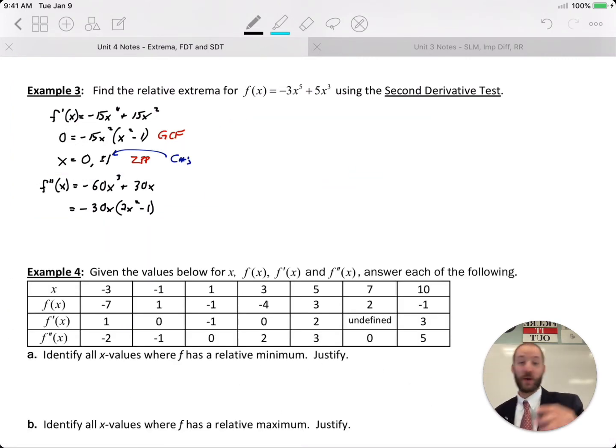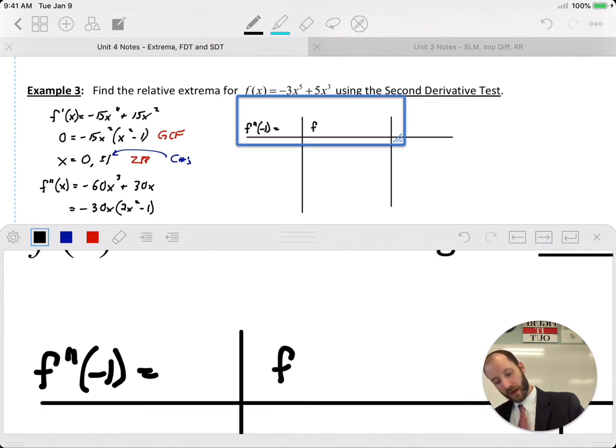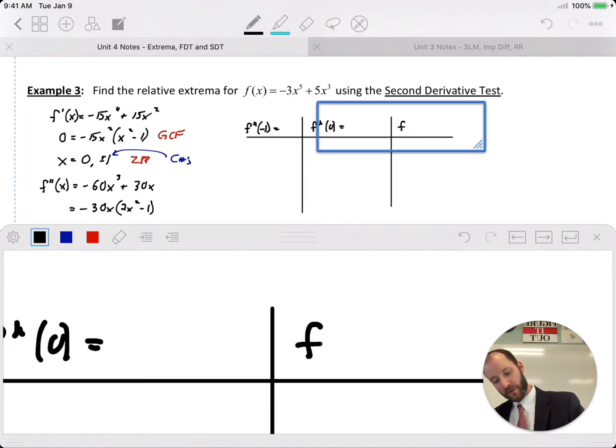Alright, so we have our boundaries, we have our critical numbers. We have three of those, so three boundaries. So I have only two because these are going to be critical numbers, three tests. Those are my test points. So I need three columns. f double prime of negative one, f double prime of zero, and f double prime of positive one.